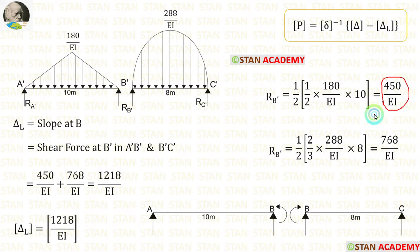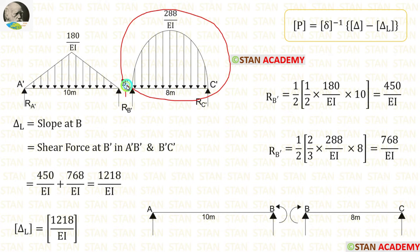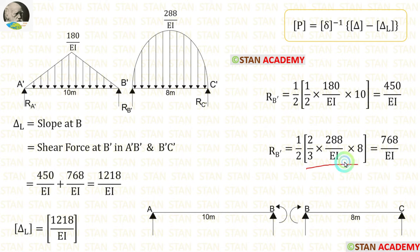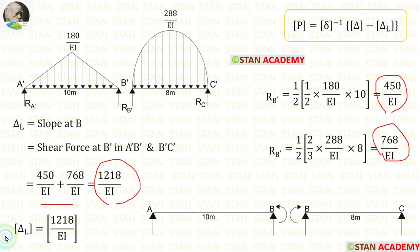Now let us take B'C' and find out RB'. This is also a symmetrical diagram, so we divide the total load by 2. To calculate the total load, we find the area. Consider a second-degree parabola with breadth B and height H; the area formula is (2/3) × breadth × height. Using the formula with breadth = 8 and height = 288/EI, after calculation we are getting 768/EI. Then let us add both values — after adding, we have calculated the delta L matrix.